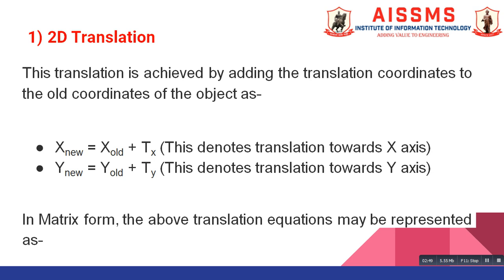This translation is achieved by adding the translation coordinates to the old coordinates of object as X new equal to X old plus TX. And this denotes translation towards X axis. Y new is equal to Y old plus TY. And this denotes translation towards Y axis.